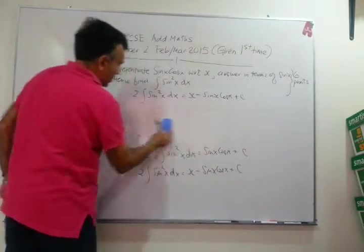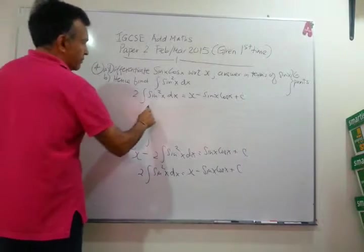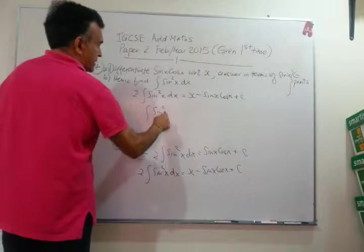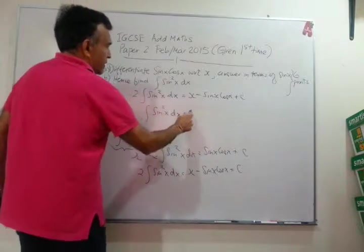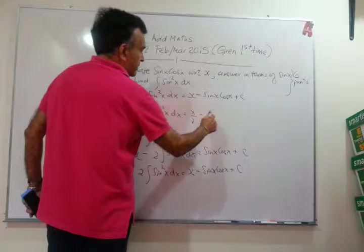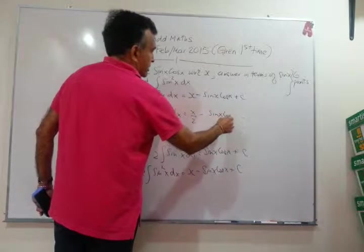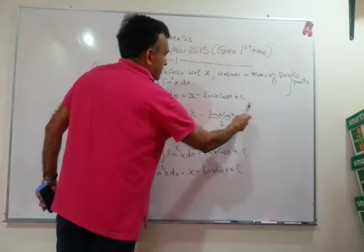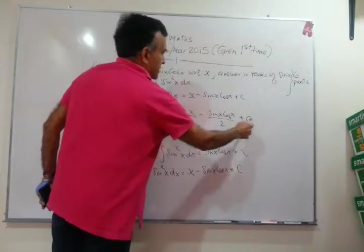Now, we are almost done. We are at the last line. Just divide throughout by 2. I have the integral of sine squared x dx will be equal to, divide by 2, the whole thing over 2 plus c.